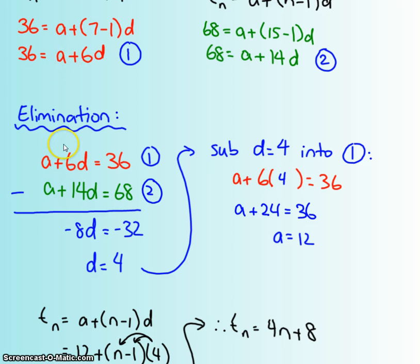So we have a plus 6d, like this, and I decide to put the 36 on this side. Then I got a plus 14d, and that's right there. I decided to do the 68 on this side, and I subtract it. So then a minus a is going to be gone, I have no a's. 6d minus 14d, I get negative 8d, equals 36 minus 68, and I get negative 32. Then I divide both sides by negative 8 to get rid of that, and d equals 4. That means that I know that each of my terms goes up by 4s.